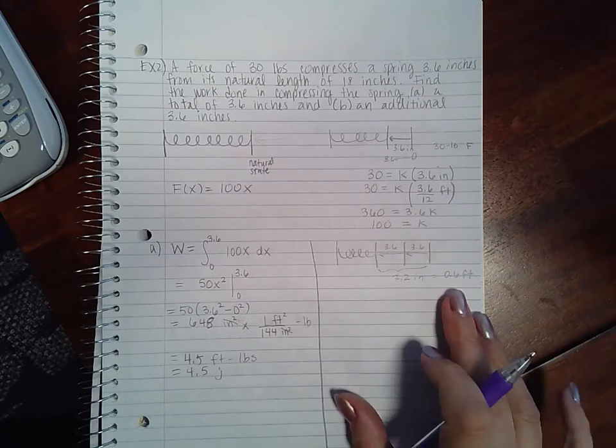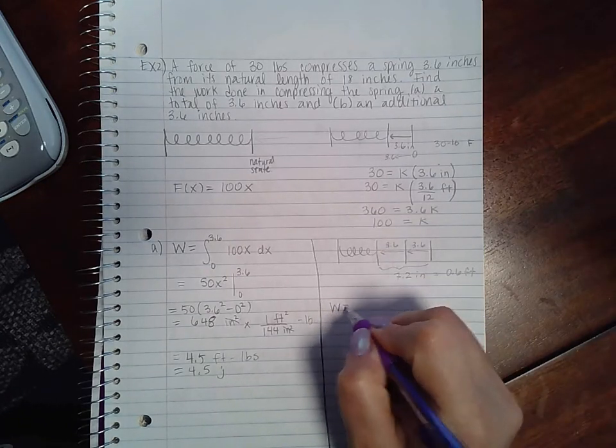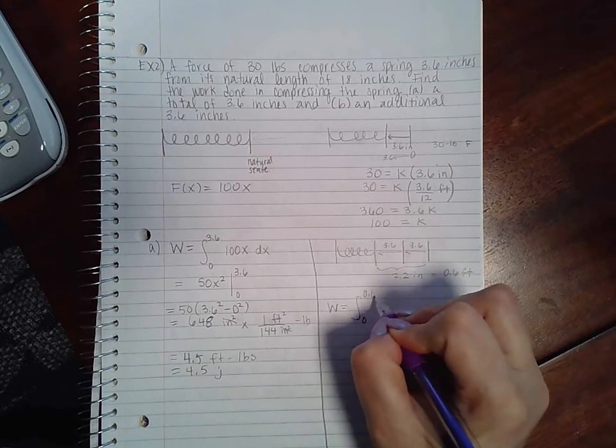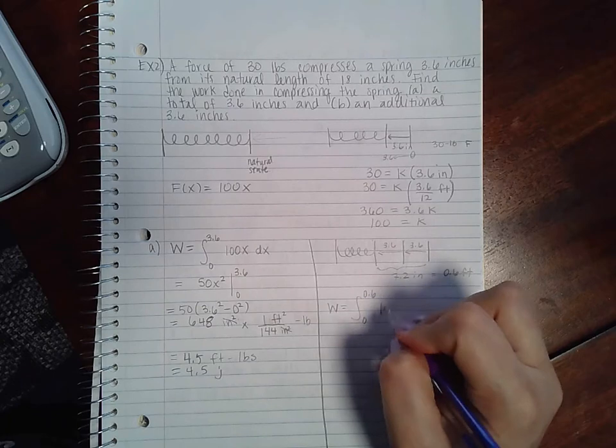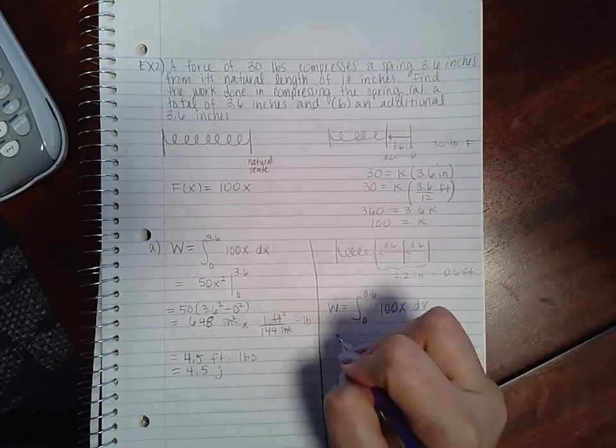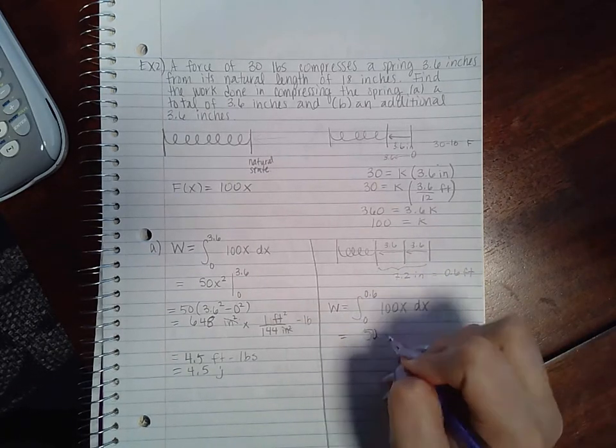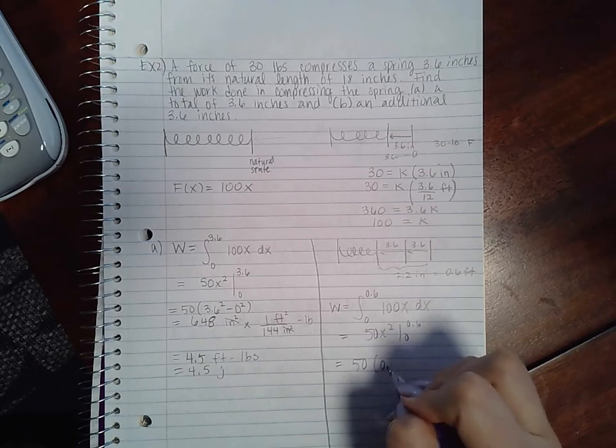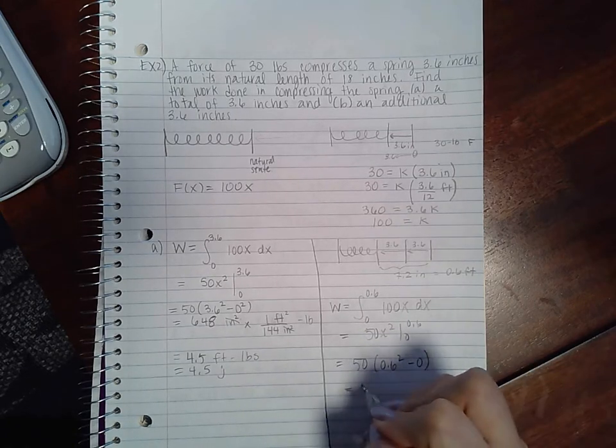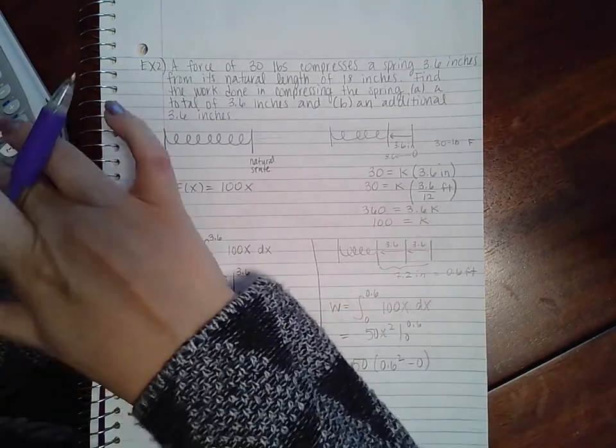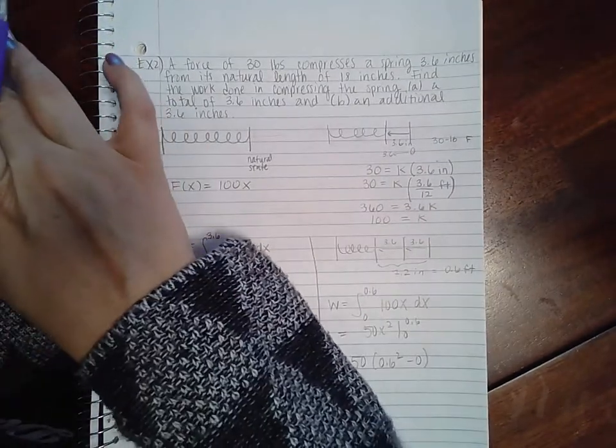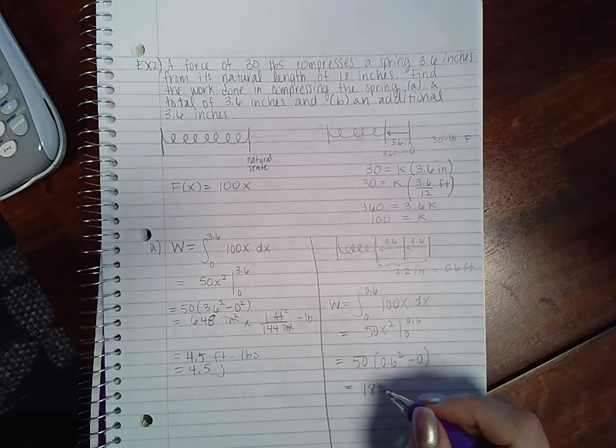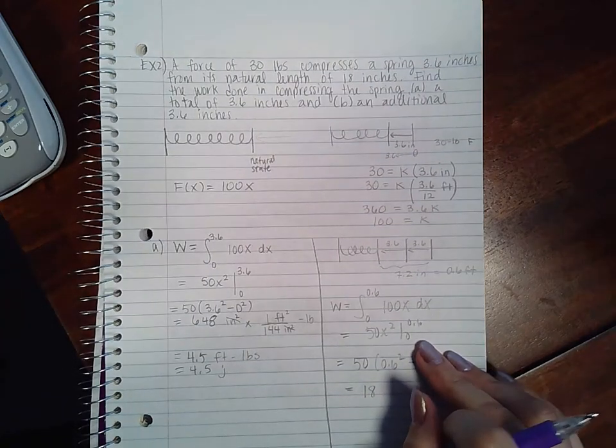So when I set up my formula, it's going to be from zero, the very beginning, and then move it over 0.6 feet total. My function is still the same, so I get 50x squared from 0 to 0.6, and then I get 50 times 0.6 squared minus 0. 0.6 squared times 50 is 18, so I end up with—oh no, I messed up.